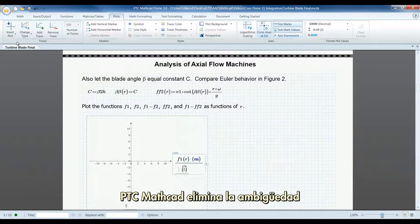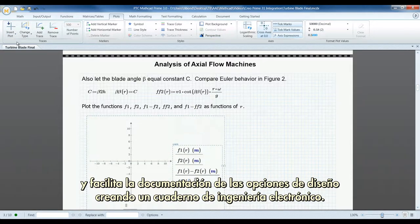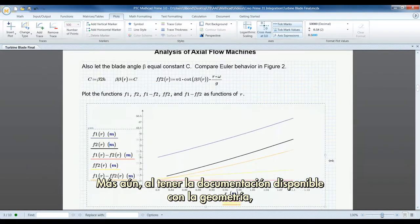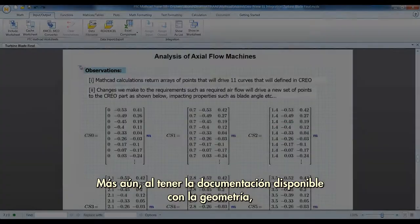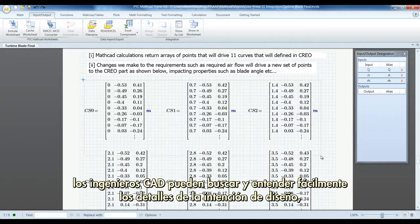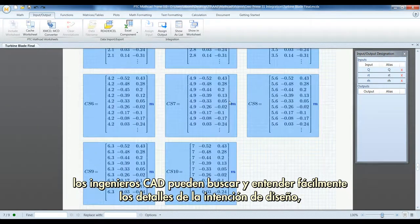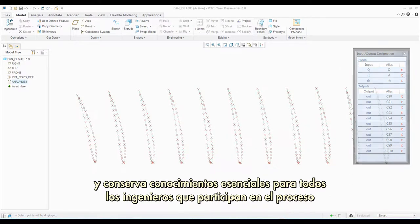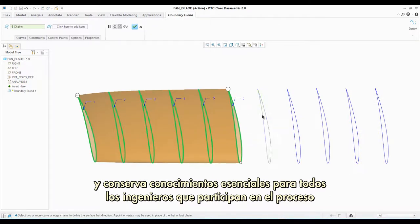PTC MathCAD removes ambiguity and makes documenting design choices easier by creating an electronic engineering notebook. Best of all, by having the documentation available with the geometry, CAD engineers can easily find and understand the details of the design intent, eliminating potential design errors while preserving essential knowledge for all engineers involved in the process.